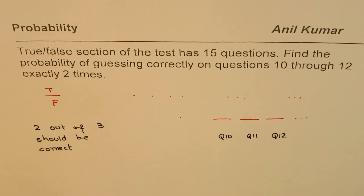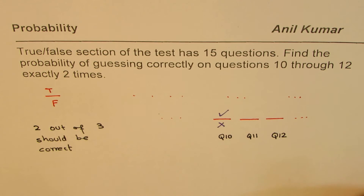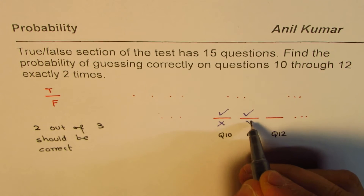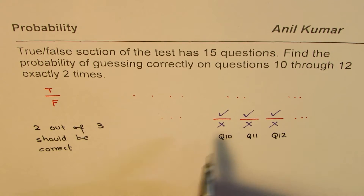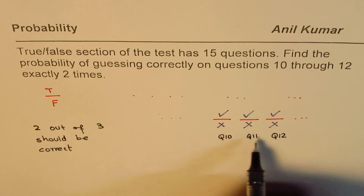That is the probability we are looking for. Now let's see how to solve it. If you are guessing, you may get it correct or you may get it wrong — so the possibility is 50/50 of getting them correct or wrong. In probability, the numerator is all possible combinations of correct answers divided by the total number of combinations.